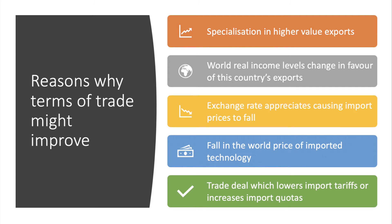Let's think about reasons why the terms of trade for a country such as the UK, or perhaps a country producing copper like Zambia, might have improved. Firstly, a country may be switching production and investment towards higher value exports — perhaps starting to process tomatoes, coffee, or cocoa rather than just extracting and exporting raw commodities. Moving into higher value-added industries can improve the terms of trade. It could also be an external factor: the world economy wanting more of what you produce, with rising incomes favouring your exports and driving up world prices.